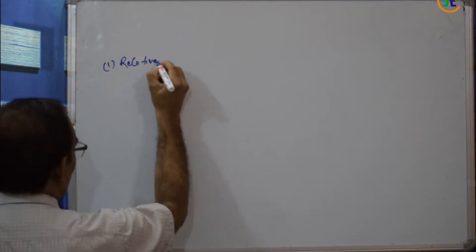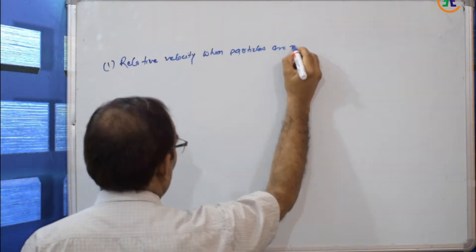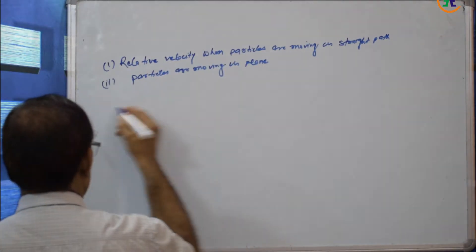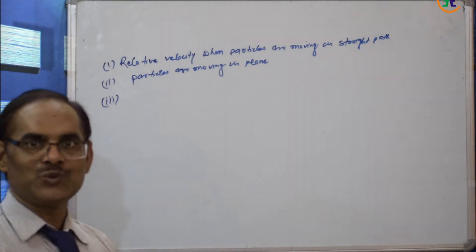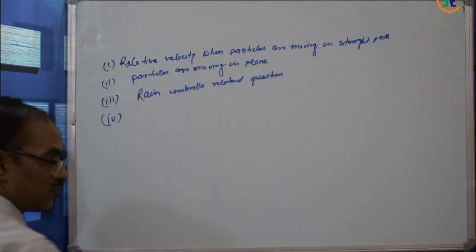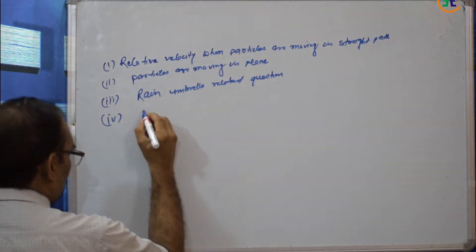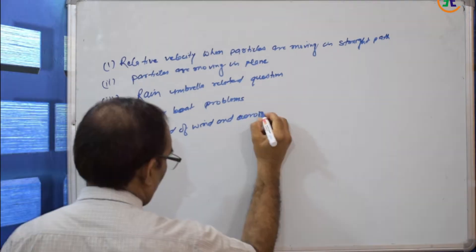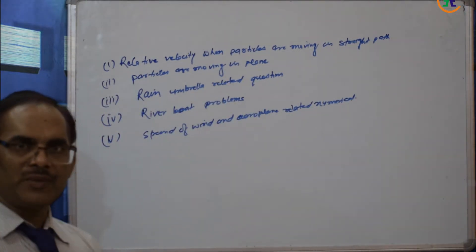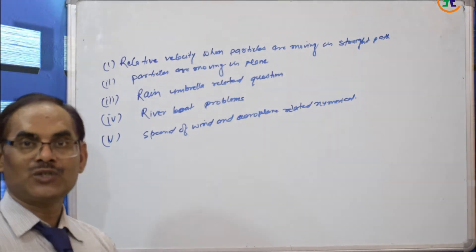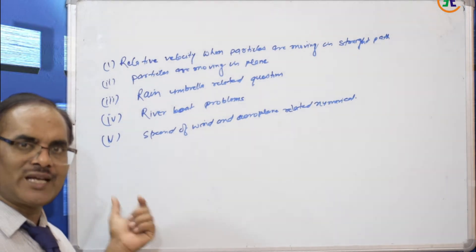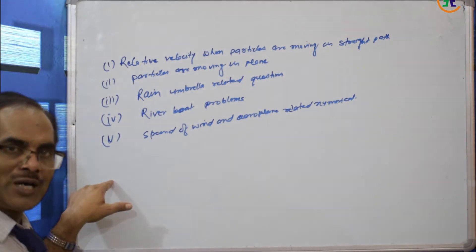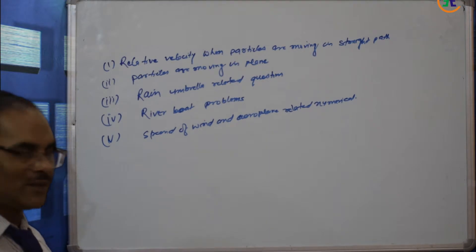To summarize, relative velocity numericals can be divided into five parts: first, relative velocity when particles are moving on a straight path; second, particles moving in a plane; third, rain and umbrella related questions; fourth, the river-boat problem; and fifth, speed of wind and aeroplane related numericals. We will solve all five parts one by one.